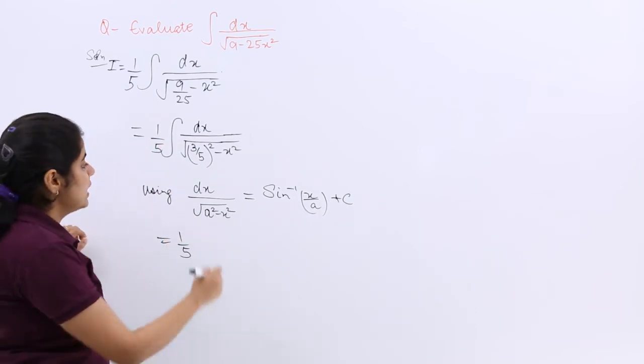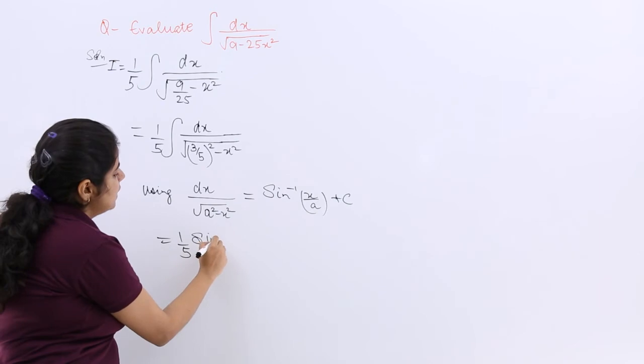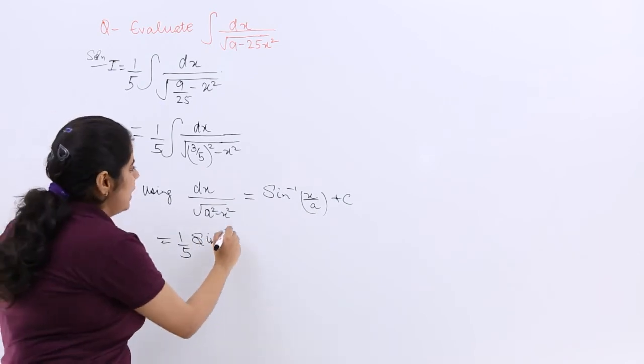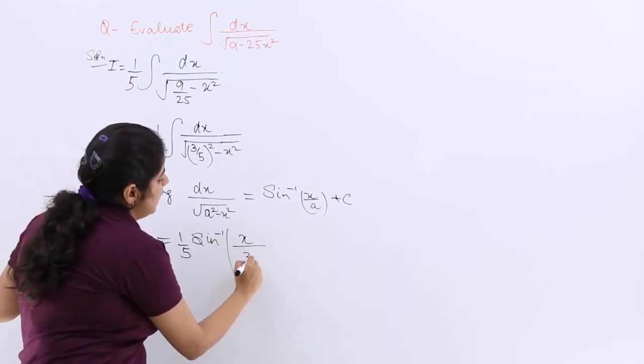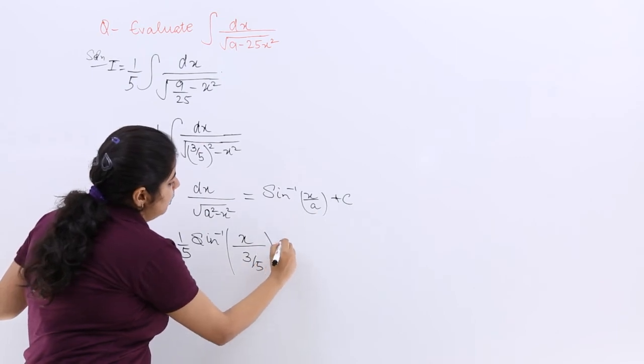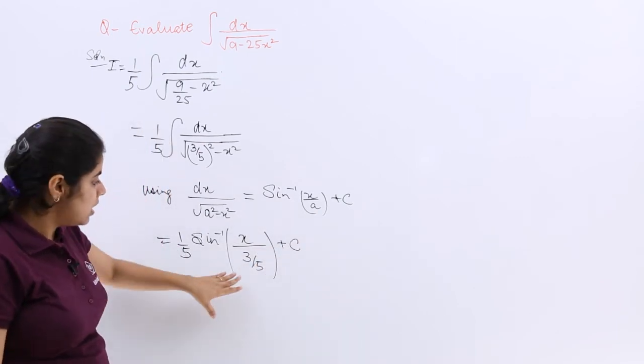So it is 1 by 5. Then it is what? Sine inverse x by a. So x by a plus c, that is the answer. But see,